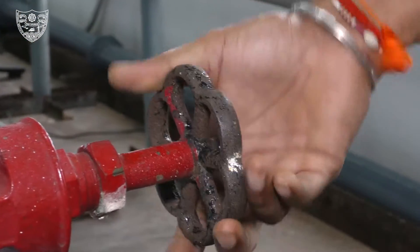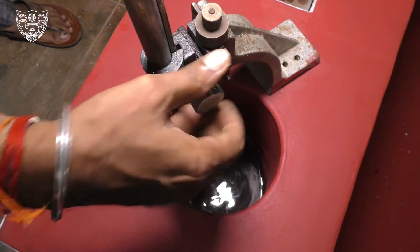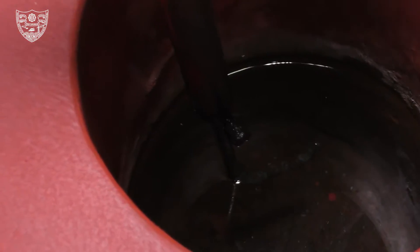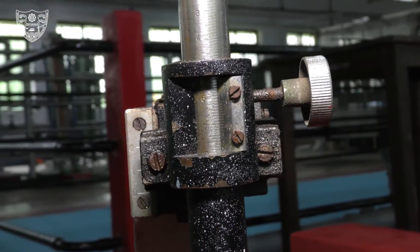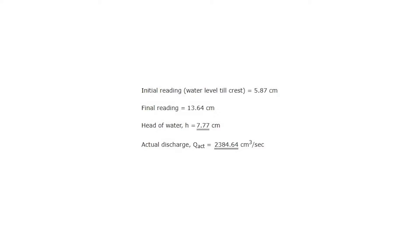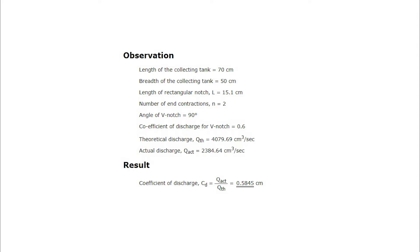Close the storage tank valve. Again, adjust the knob of the hook gauge over the notch to obtain the changed water level. Calculate the head of water and actual discharge to obtain the coefficient of discharge for this trial. Repeat the same procedure for other trials and calculate the average coefficient of discharge.